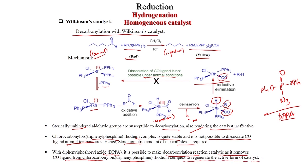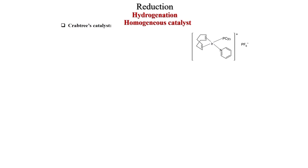Dissociation of the CO ligand is not possible under normal conditions, so the catalyst is not regenerated. Sterically unhindered aldehyde groups are susceptible to decarbonylation, rendering the catalyst ineffective. Chlorocarbonyl bis(triphenylphosphine)rhodium (the byproduct) is quite stable and it is not possible to dissociate the CO ligand at mild temperature; hence a stoichiometric amount of complex is required. However, with diphenylphosphoryl azide (DPPA), it is possible to make the decarbonylation reaction catalytic, as DPPA removes the CO ligand from chlorocarbonyl bis(triphenylphosphine)rhodium to regenerate the active catalyst form.